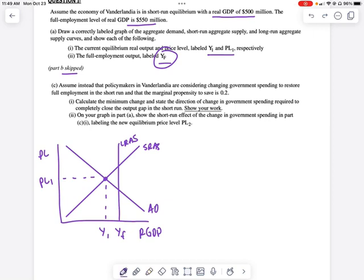Now it says, assume that policymakers in Verlandia are considering changing the government spending to restore full employment. So that means they wanna get the economy back to that intersection in the short run. And the marginal propensity to save is 0.2.